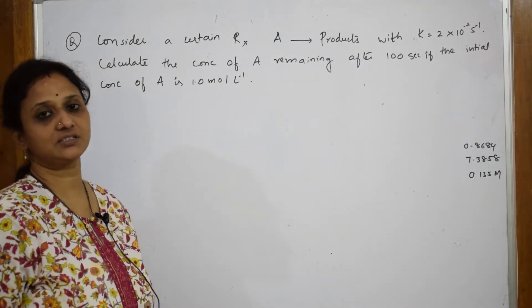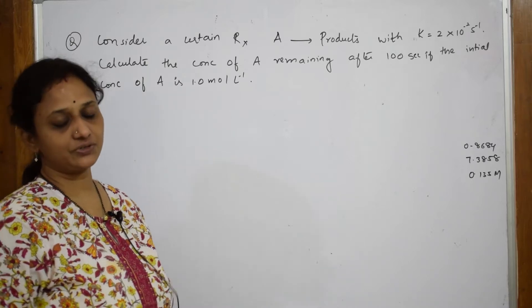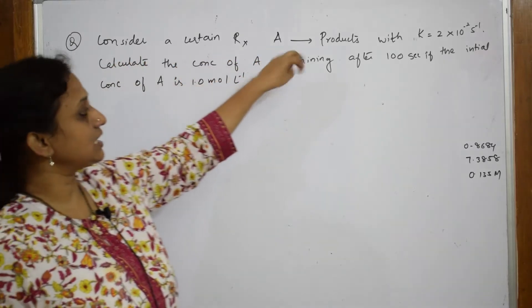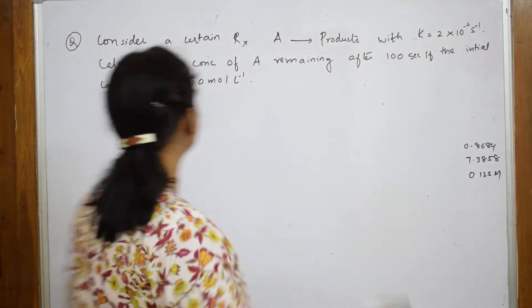One more type of first order numerical, first order rate equation numerical. Let us see this. Consider a certain reaction A giving us products with a rate constant given.